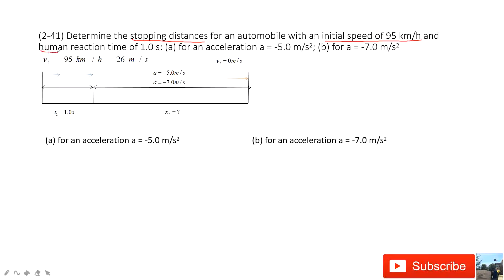And we know the human's reaction time is 1.0 second. I ask you to find the stopping distance in two cases. First one is acceleration is negative 5.0 meter per second square. The second one acceleration is negative 7 meter per second square.